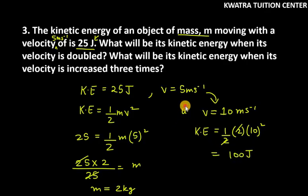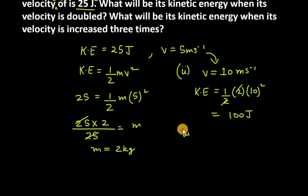Let's find the last one. It says what will be its kinetic energy when its velocity is increased three times. That means 15 meters per second inverse. Now, kinetic energy. Kinetic energy is half mv square. How much is it in this case?